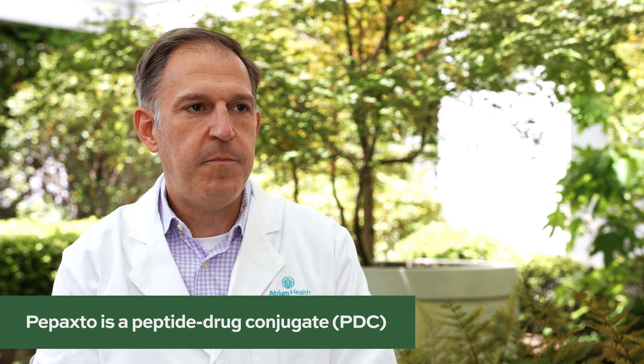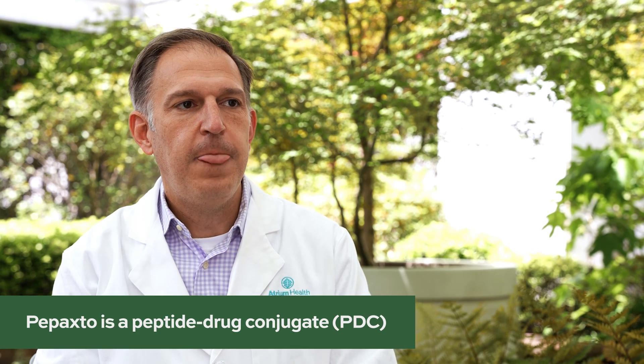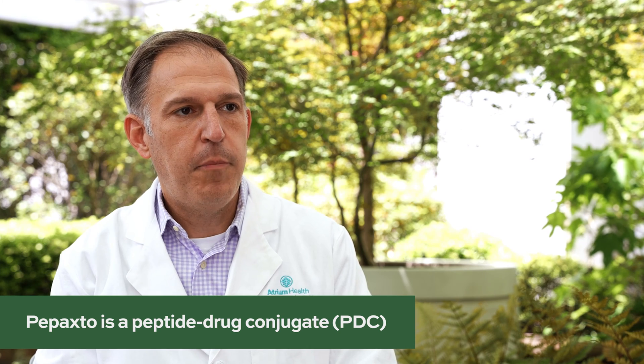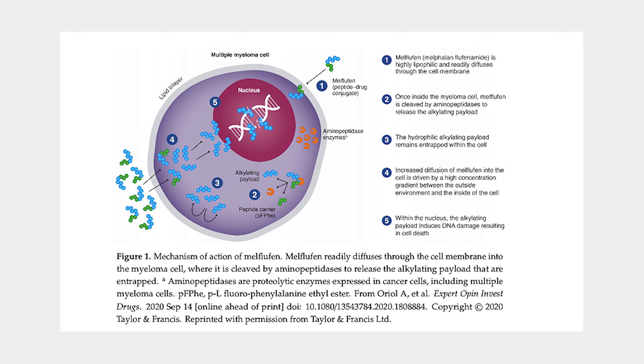Melphalanflufenamide is a peptide drug conjugate, meaning the alkylator portion of the therapy is attached to a peptide. This peptide is what we call lipophilic — fat-loving — which allows it to actually cross the cell membrane, the surface of the myeloma cell, quite readily.